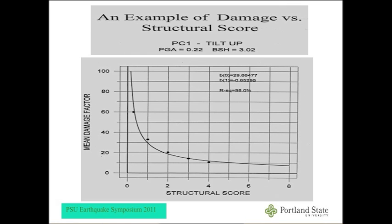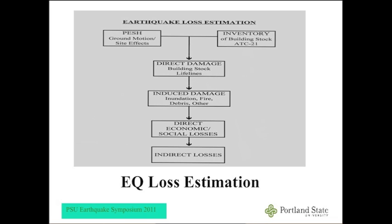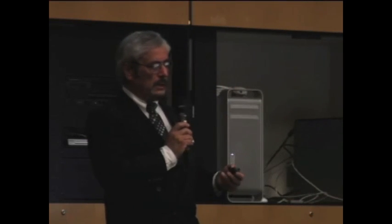This gives a relationship between the damage factor and the structural score — the higher the score, the better the structure performs. We generate these for all different types of structures, such as tilt-up. The model incorporates inventory, ground motion, and direct damage to building stock and lifelines. There are also induced damages such as fire and debris, and direct economic and social losses, but our investigation only addressed direct damage to the building stock.